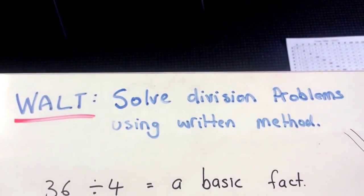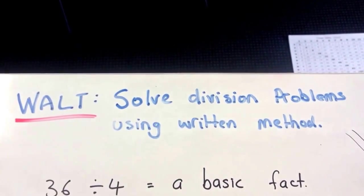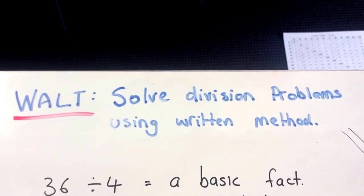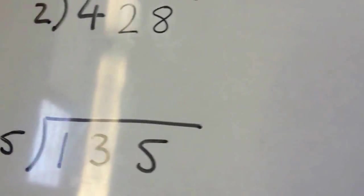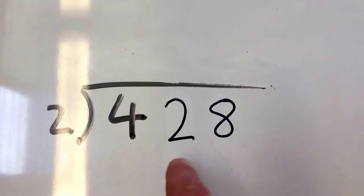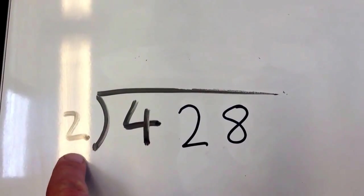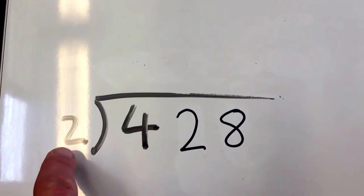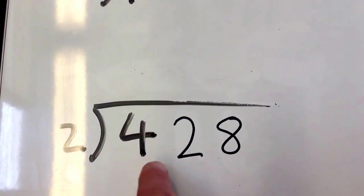All right, so we're back again. This time we're having a look at solving division problems with the written method. Let's get into the first one. Here's our first equation: 428 divided by 2. We're asking how many times does 2 go into 428?